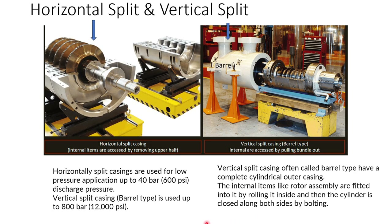There are two types of compressor casings: horizontally split and vertically split. The horizontally split compressor, shown on the left, has its joint in the horizontal section and is used for low pressure applications up to 40 bar. On the right-hand side is the vertically split barrel compressor, where all joints are vertical. The internal components are assembled and then pushed into the barrel.